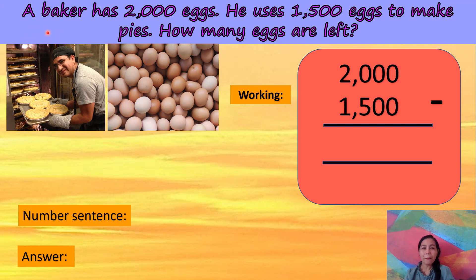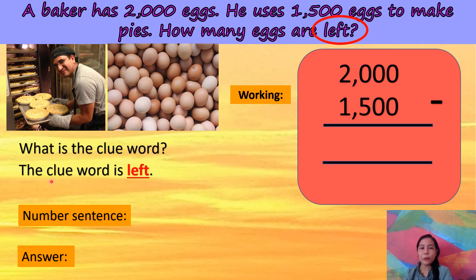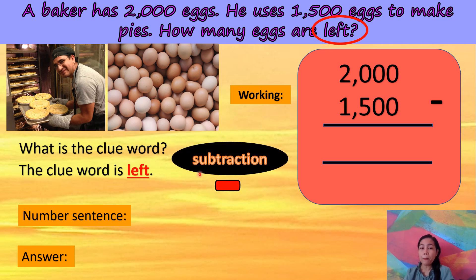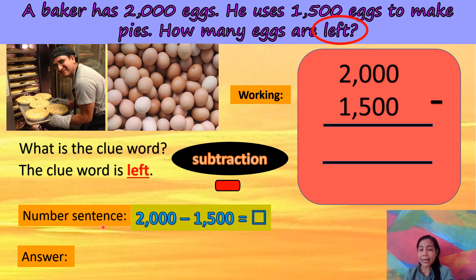Let's practice more. A baker has 2,000 eggs. He uses 1,500 eggs to make pies. How many eggs are left? The baker has 2,000 eggs and he uses 1,500 eggs. The clue word is left, so the math operation is subtraction, and you use the minus sign. The number sentence is 2,000 minus 1,500 equals blank. This is the working — a space for you to solve for the answer.